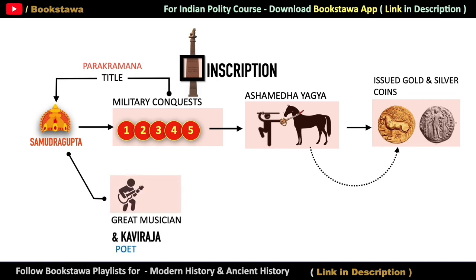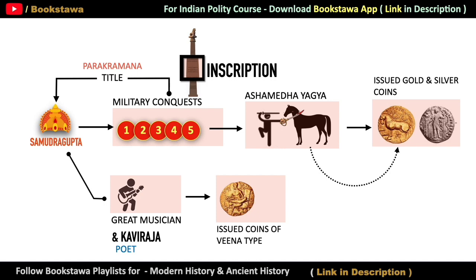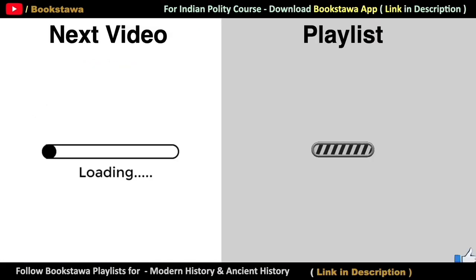He must have been a good musician. This is known from the fact that he also issued some coins in which he is shown playing Veena, i.e. a harp. So these were the details related to Samudragupta, who ruled from 330 AD to 380 AD.